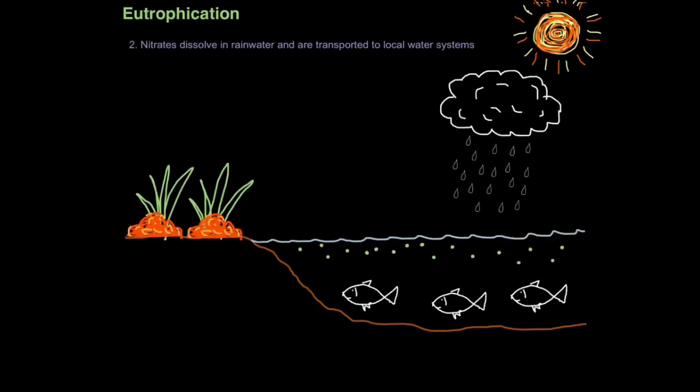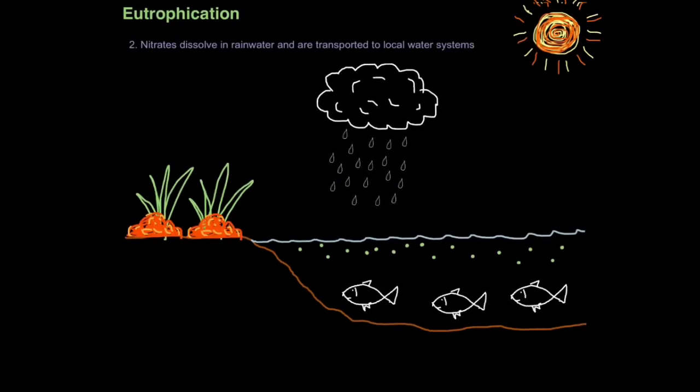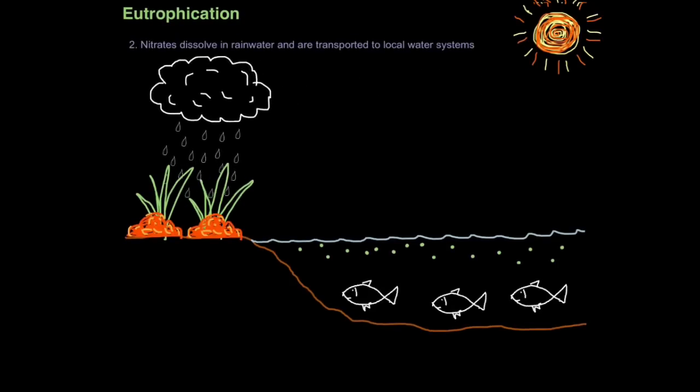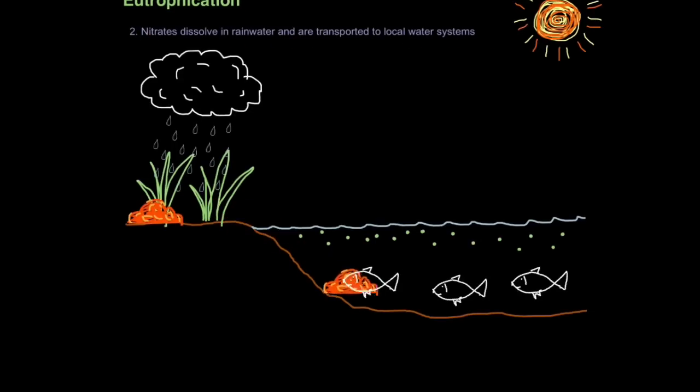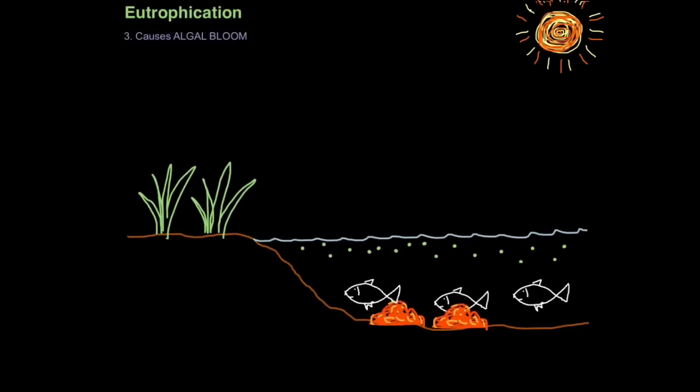So these nitrates are water soluble. So when it rains, the rainwater dissolves these nitrates. And then these nitrates basically run off into the local rivers and ponds and lakes, local water systems. So nitrates dissolve in rainwater and are transported to local water systems.